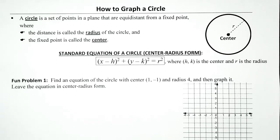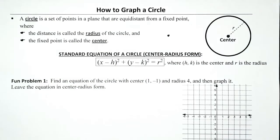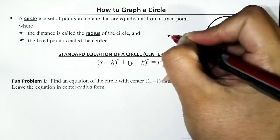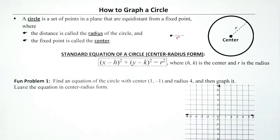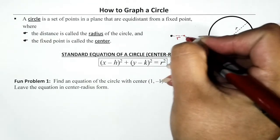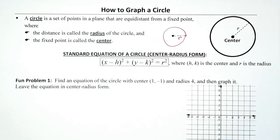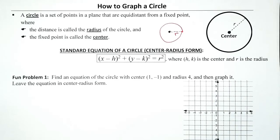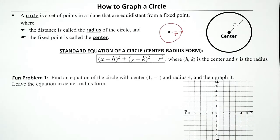Welcome back. Today we are going to be graphing circles. A circle is a set of points in a plane that are equal distance from a fixed point. We have a fixed point called the center, and then a fixed distance called the radius. We take this fixed distance and spin it around — the distance from the center to any point on the circle is always the same.